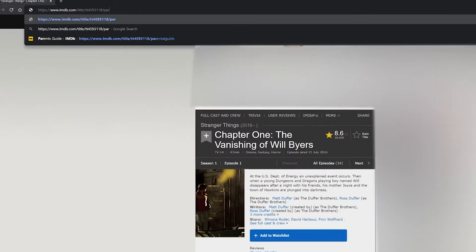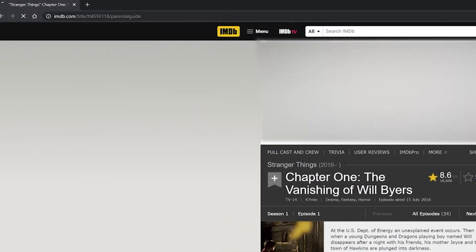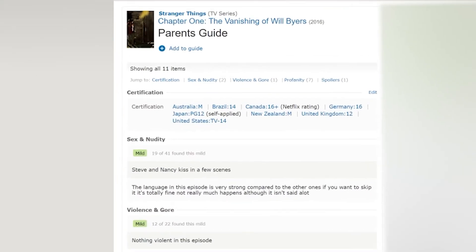A great resource for finding out content details is the Parental Guide on IMDb. Go to the show or movie page at imdb.com, then type Parental Guide after the URL. You can also check out PluggedIn.com, a Christian media review site, if you want a Christian perspective on media.